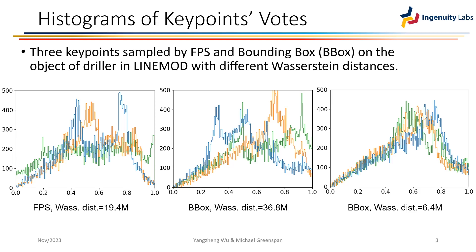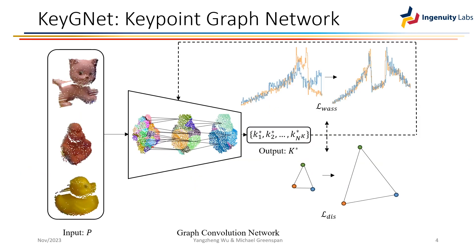The majority of backbone networks employed in 6D pose estimation adhere to a classification structure. If the votes from the first and second histograms were learned by such networks, they might encounter a class imbalance issue. In contrast, the votes in the third histogram could be learned more effectively. We thereby propose Key-GNet, a network that learns features extracted from segments of targeted objects in real scenes to estimate a set of optimized keypoints with similarly distributed votes.